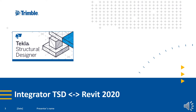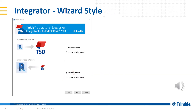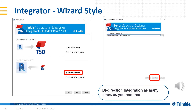Let's start with the integrator. Depending on which version of Revit you are using, you can download the relevant integrator from our website by logging in with your Trimble ID. Once installed, Tecla Structural Designer integrator can be found in Revit under the Tecla tab. Integration is bi-directional, so you and your BIM technician can work side by side and capture changes on either side.